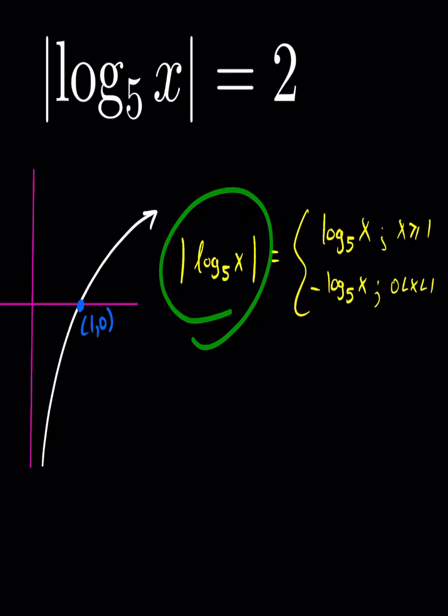By definition the absolute value of log base 5 of x takes on two values. Either it's going to output itself when x is greater than or equal to 1, that'll represent this area here, or when x is below the x-axis, i.e. negative, that'll be between 0 and 1, it'll output negative log base 5 of x.